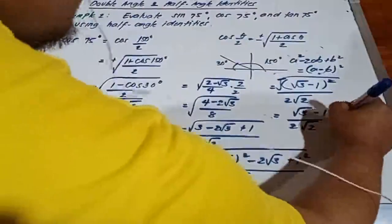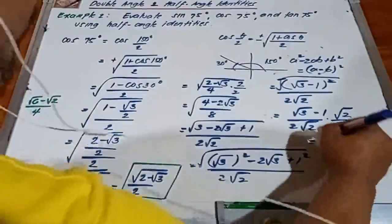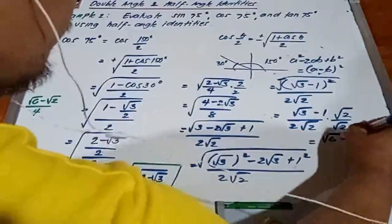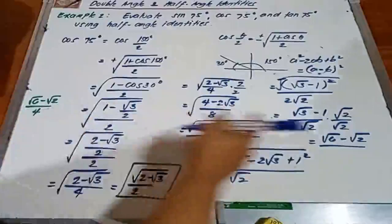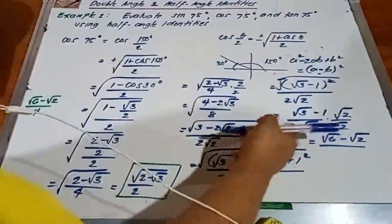Rationalizing the denominator, we have square root of 2 at the top, square root of 2 at the denominator. So we have square root of 6 minus square root of 2. Square root of 2 times square root of 2, square root of 4. Square root of 4 is 2 times 2, 4.